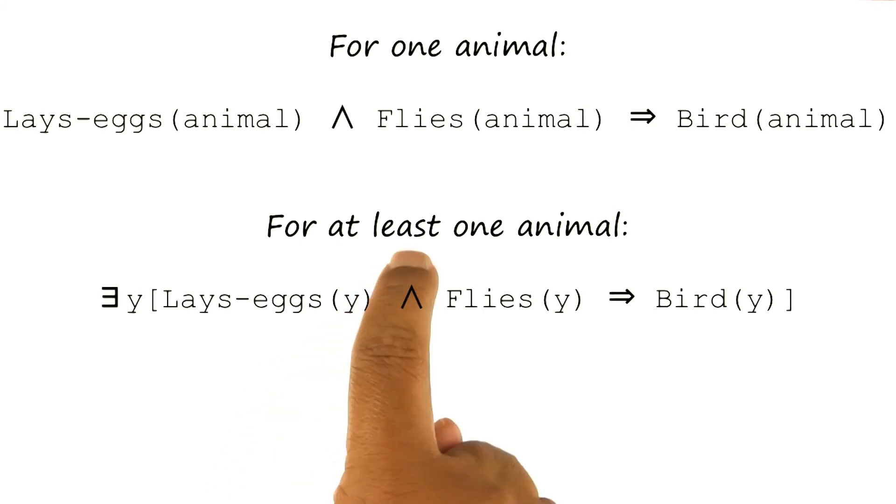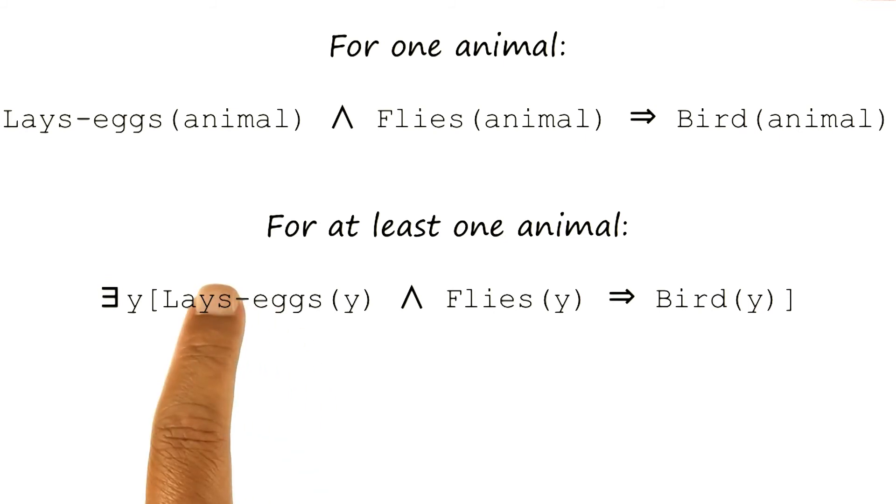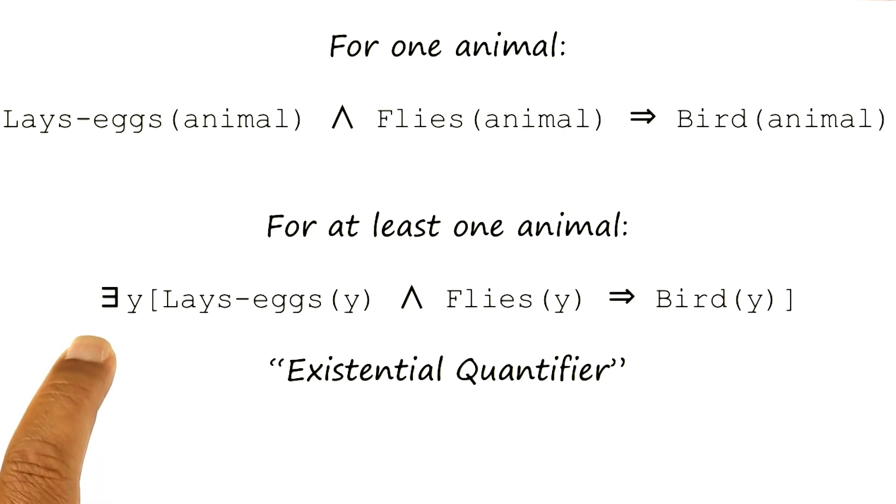I can specify the value that the variable y can take. This time I want to specify not that this sentence is true for all values of y, for all animals, but supposing I want to say that it is true for some, at least one animal, in which case I'll use an existential quantifier. Here is a symbol for an existential quantifier. This existential quantifier says that there is at least one animal for which this sentence happens to be true.